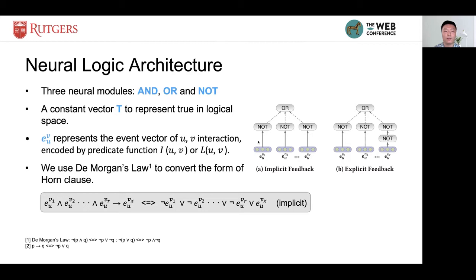Figure A gives an example of implicit feedback neural logic network architecture. If we consider explicit feedback as what is given in figure B, the structure of the network can be diverse, since some event embeddings need to be fed into the NOT module to get the negation form of the vector.